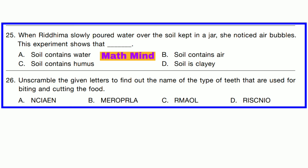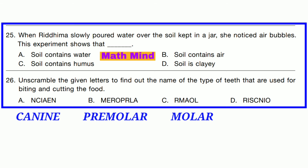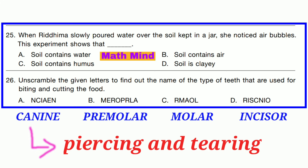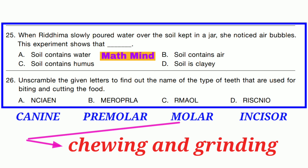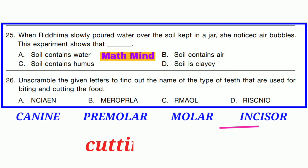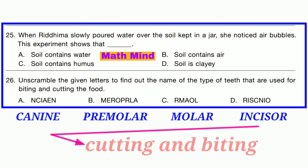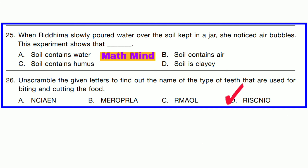Question number 26. Unscramble the given letters to find out the name of the type of teeth used for biting and cutting food. On unscrambling the letters, we get: option A — canine, option B — premolar, option C — molar, option D — incisor. Work of canine: piercing and tearing. Work of molars: chewing and grinding. Work of premolar: chewing and grinding. Work of incisor: cutting and biting. So option D is correct: incisor.